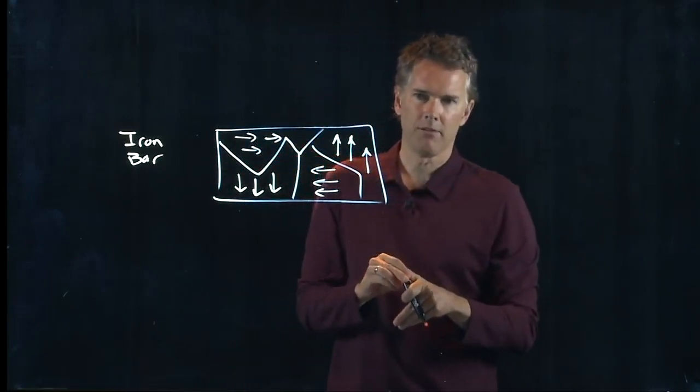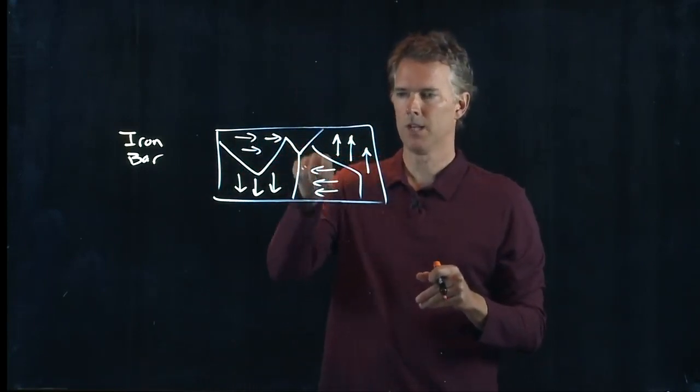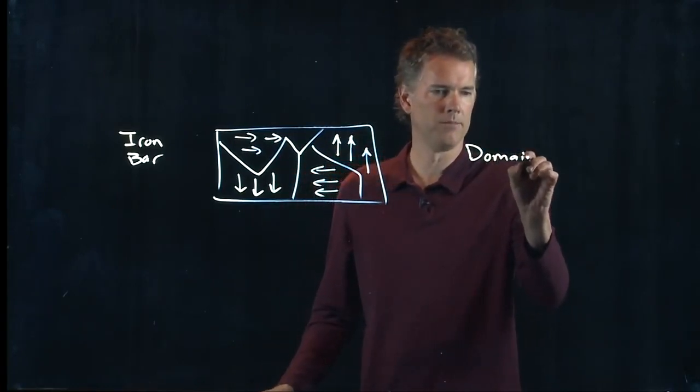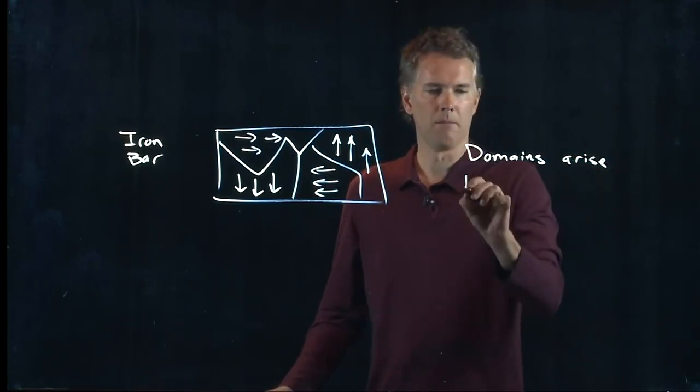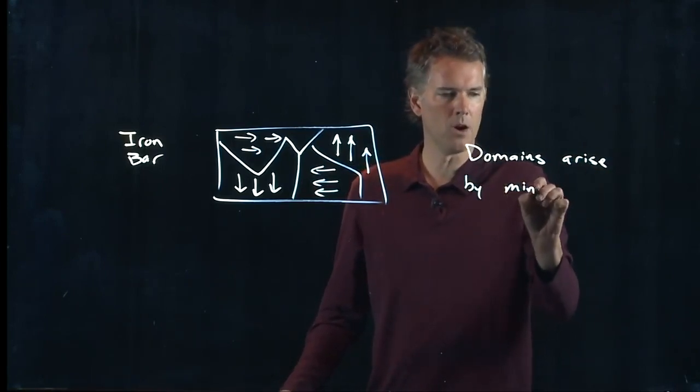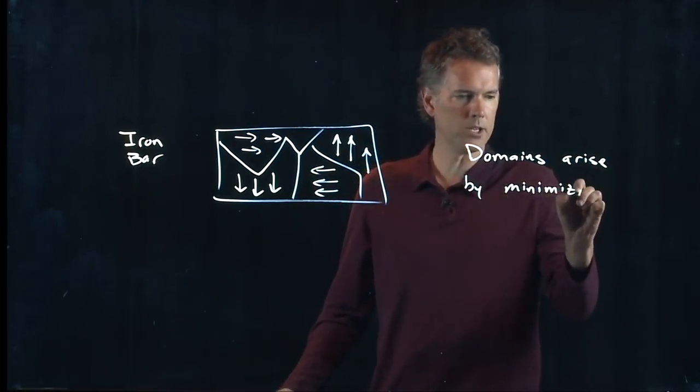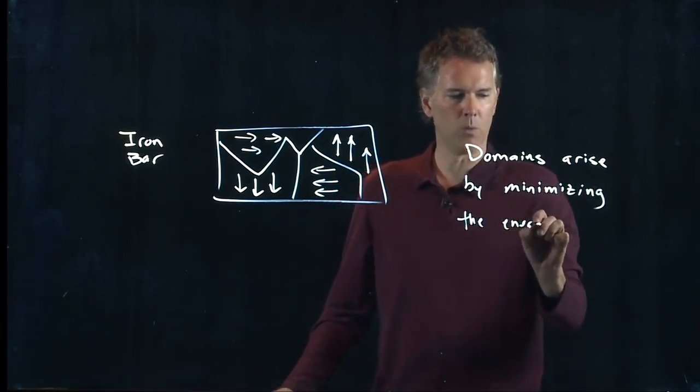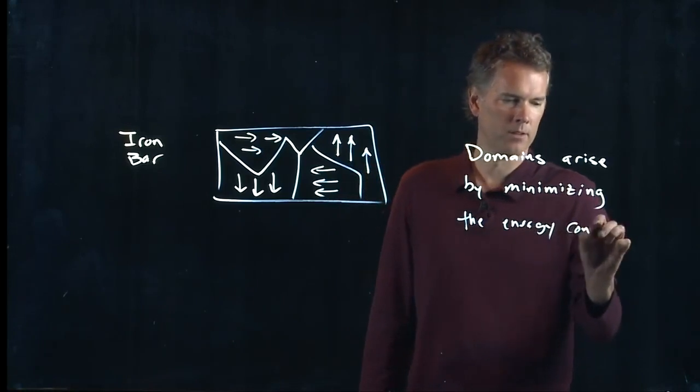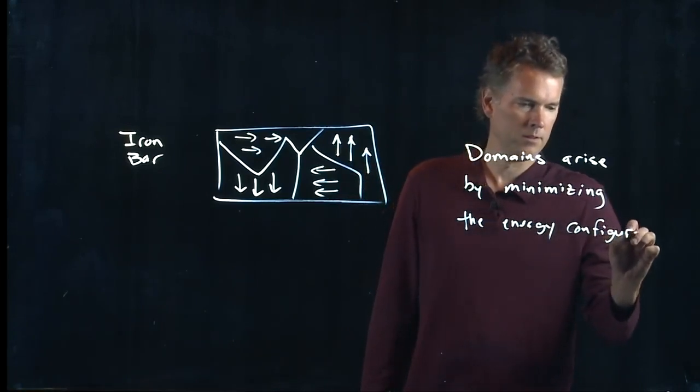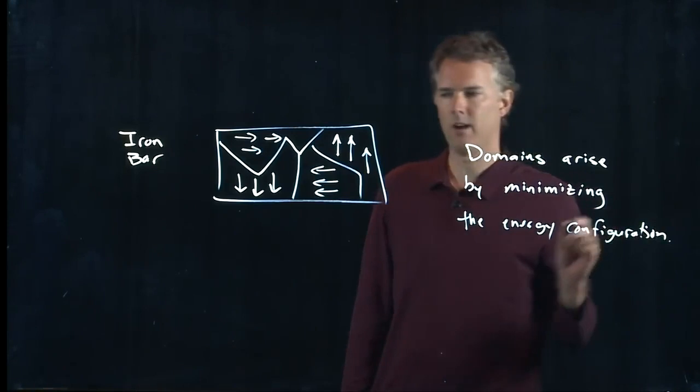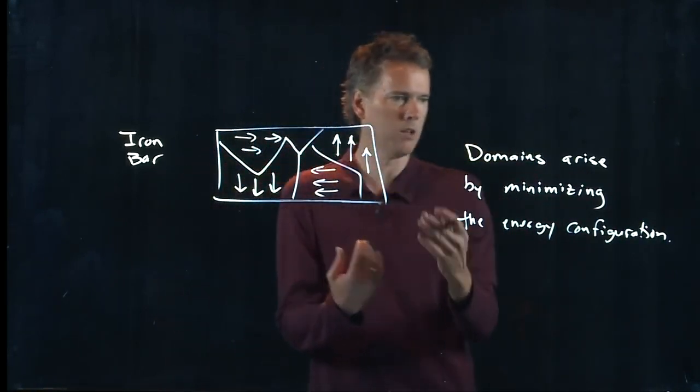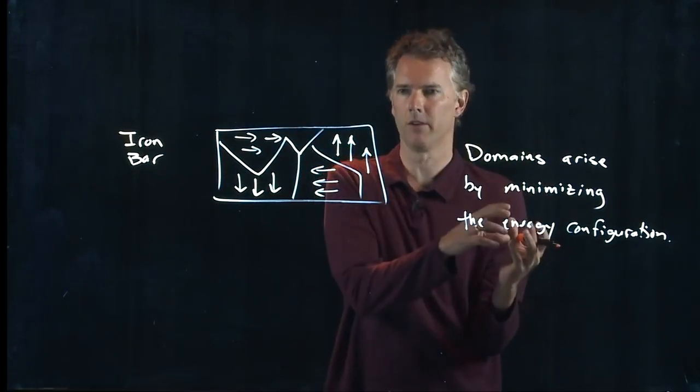What defines those groups? It turns out that the domains arise by minimizing the overall energy configuration. So when you have spins, when you have dipoles that are aligned or not aligned, there is some particular energy associated with that configuration.